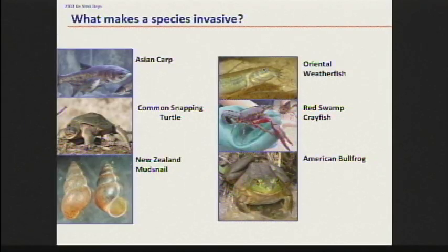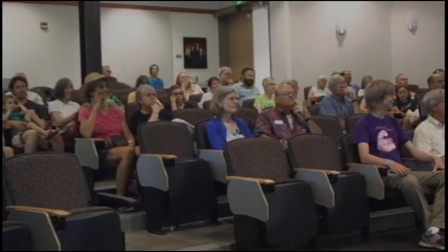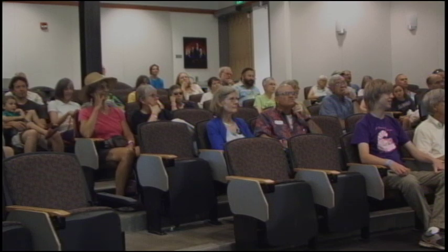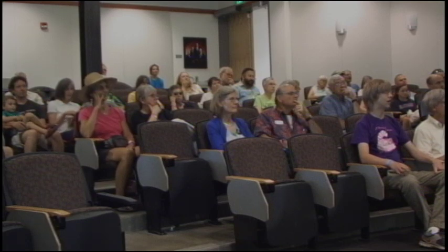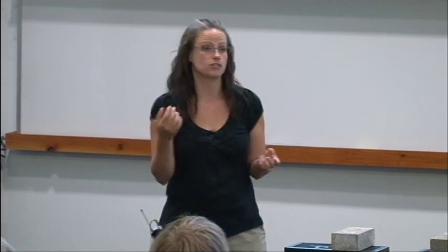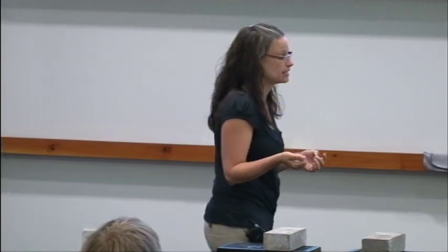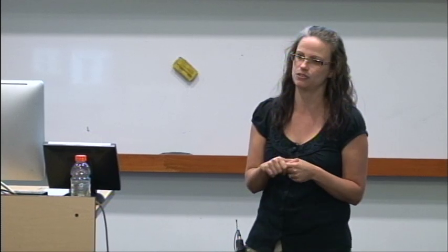Common snapping turtle — mean guys. They're from the southeast U.S., and they are very strong competitors, so they outcompete our native turtles for space, nesting space, and resources. New Zealand mud snail — they're in some of our coastal estuaries, in the Snake River, and in the Deschutes.